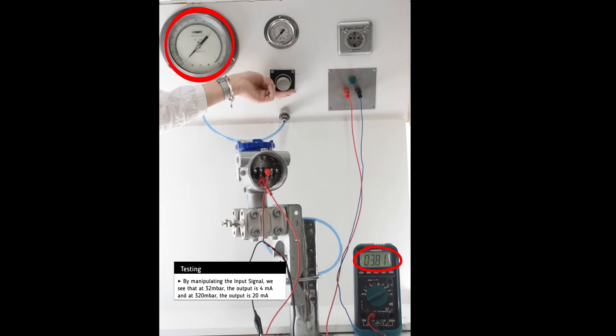By manipulating the input signal, we see that the unit reacts accordingly and at 0.032 bar the output is 4 milliamps, and at 0.32 bar the output is 20 milliamps.